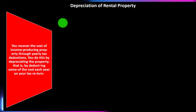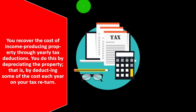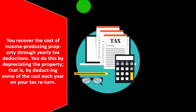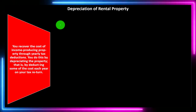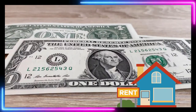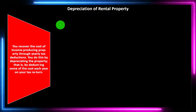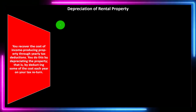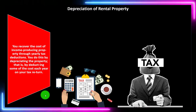We're looking at depreciation of the rental property. You recover the cost of income-producing property through yearly tax deductions by depreciating the property — that is, by deducting some of the costs each year on your tax return. Depreciation itself is basically an accrual concept, so even if you're on a cash basis method, the tax code will require us to move to an accrual concept. Even if we paid all cash for the rental property, we still have to record it on the books as an asset rather than simply expensing it, because it's a substantial investment benefiting us into the future. We have to put it on the books as an asset and allocate the cost over the useful life, as determined by the tax code.